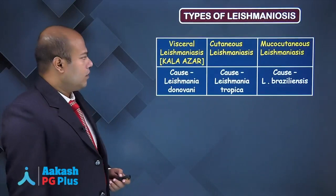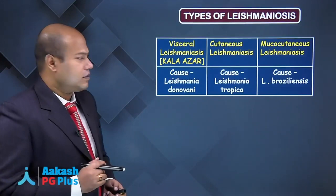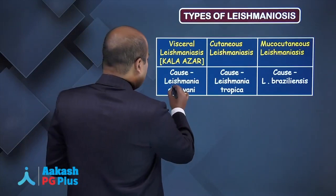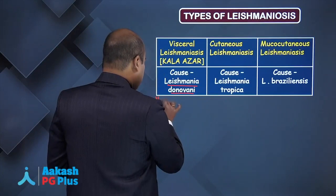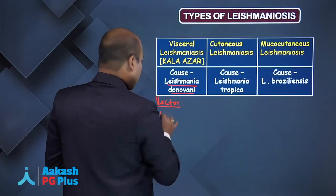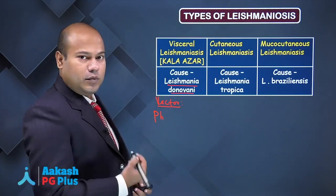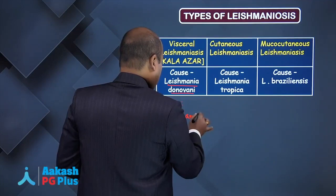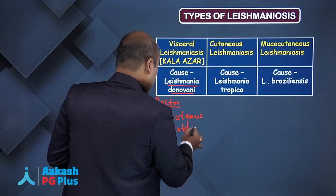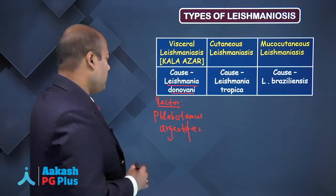Types of Leishmaniasis: visceral Leishmaniasis, cutaneous Leishmaniasis, and mucocutaneous Leishmaniasis. Visceral Leishmaniasis is caused by Leishmania Donovani. The vector for transmission is the sandfly — scientific name Phlebotomus, specifically Phlebotomus Argentipis.